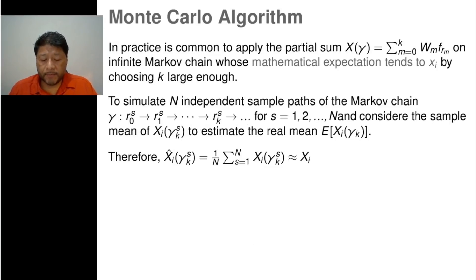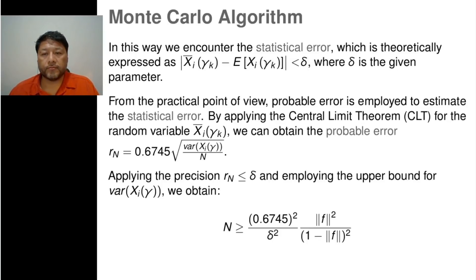In the long term, the partial sum of infinite Markov chains will be the mathematical expectation of vector X, based on simulating several Markov chains. Different kinds of errors help us to obtain the accuracy of the method based on the number of Markov chains involved in the simulation.